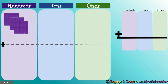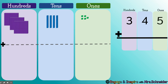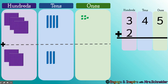This problem is going to be 345. Do you see that? There's three hundreds, four tens, and five ones. So 345 plus — 100, 200, 10, 20, 30, 4 — plus 234.